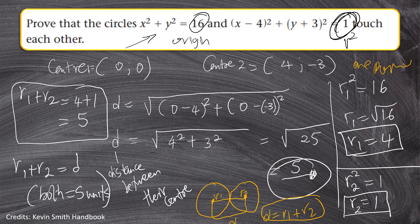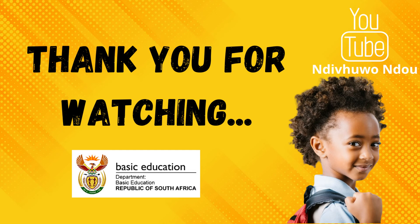That's basically how you approach these questions — very interesting and simple. Calculate the distance between their centers, calculate their radii and sum them up, compare the two values using the three cases, and you'll be able to deduce whether they touch at one point, two points, or do not touch each other at all.